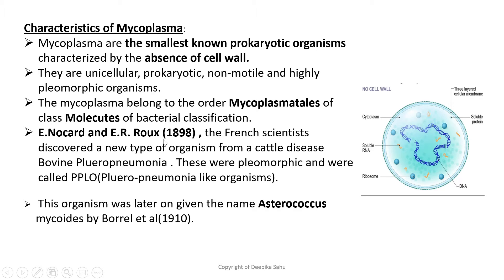Nocard and Roux in 1898 were the French scientists who discovered a new type of organism from the cattle disease bovine pleuropneumonia. These organisms were pleomorphic and were called PPLO, or pleuropneumonia-like organisms.